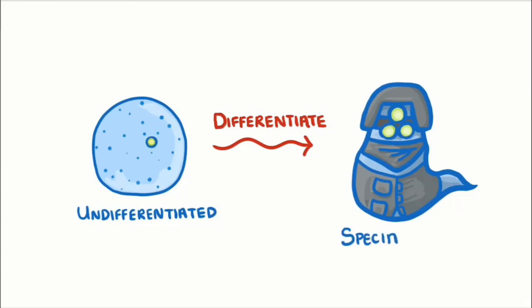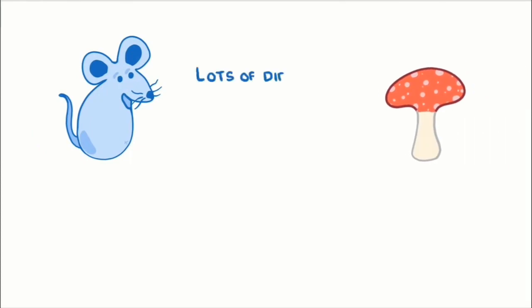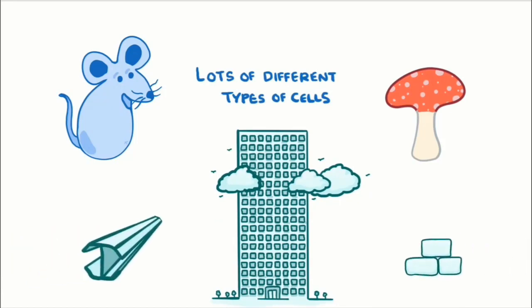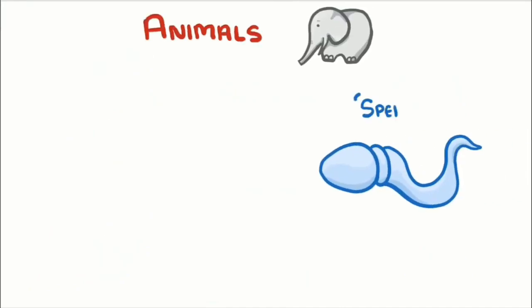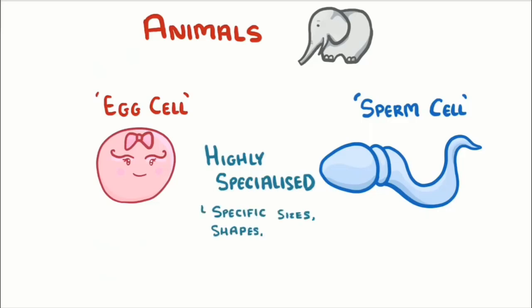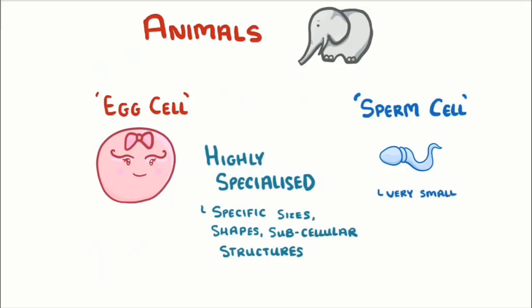We will take a look at some examples of specialized cells. In order to make a complex organism — whether it's a mouse or a mushroom — you need lots of different types of cells, just like how a building is made from lots of different materials. Animal life starts when a sperm cell combines with an egg cell. These two cells are highly specialized, meaning they have specific sizes, shapes, and sub-cellular structures to help them carry out their functions.